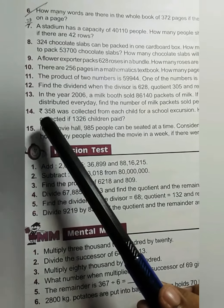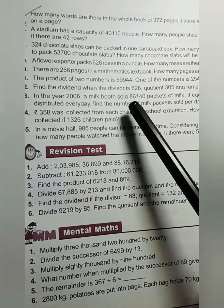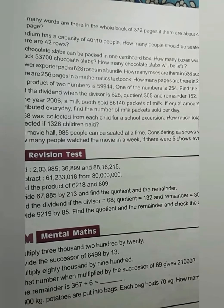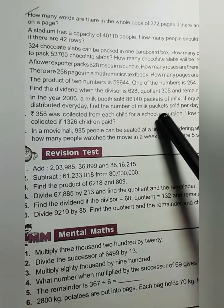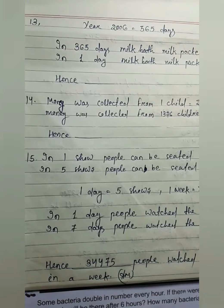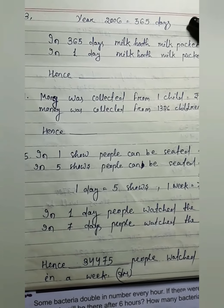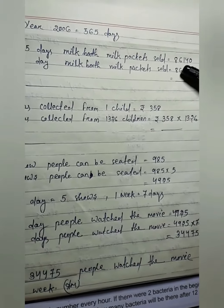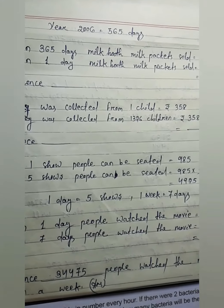13th number: In the year 2006, a milk booth sold 86,140 packets of milk. If equal amount of milk was distributed every day, find the number of milk packets sold per day. In the year 2006 means 365 days. So in 365 days, the milk booth sold this many milk packets. For one day, just divide. Then you get your answer.